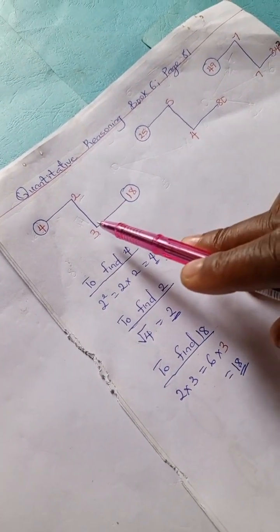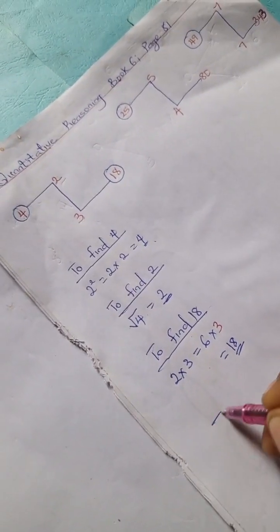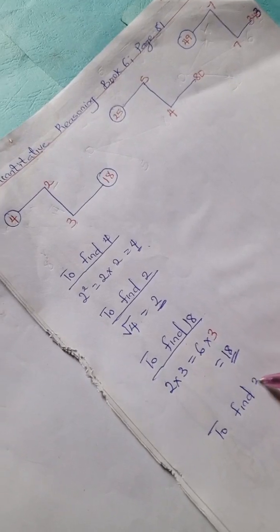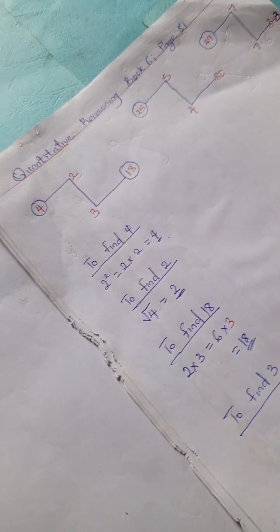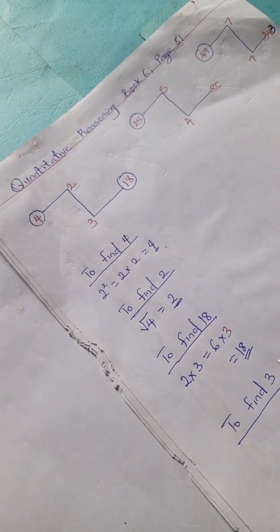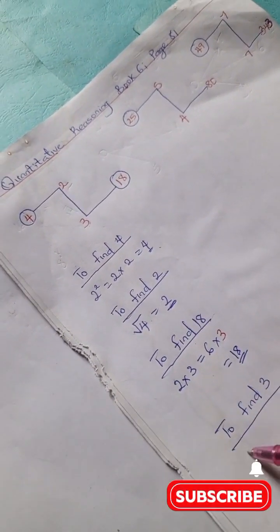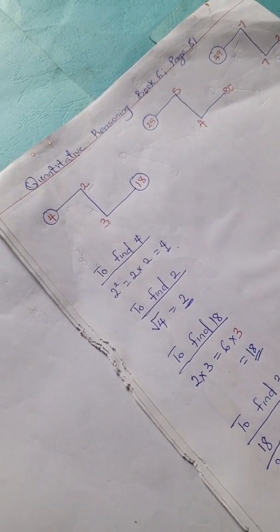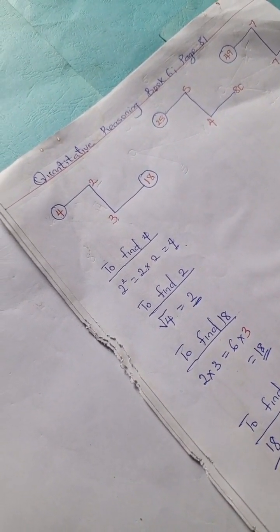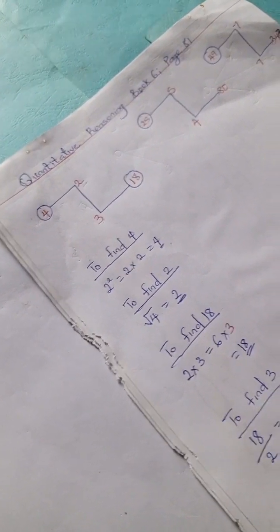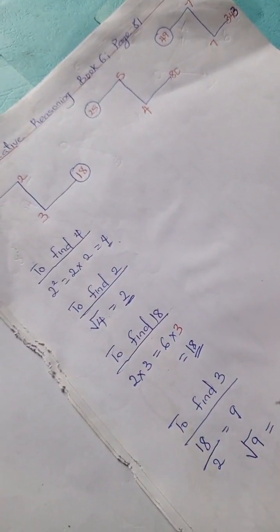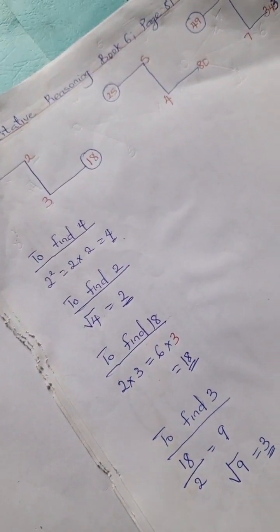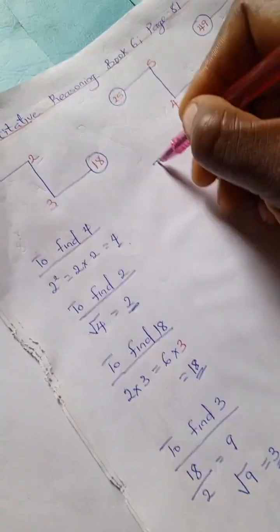Next, we're going to find 3. To find 3, we're going to have this 18 divided by this 2, which is 9. We'll go ahead to say square root of 9 is 3. So we're going to apply the same principle here.